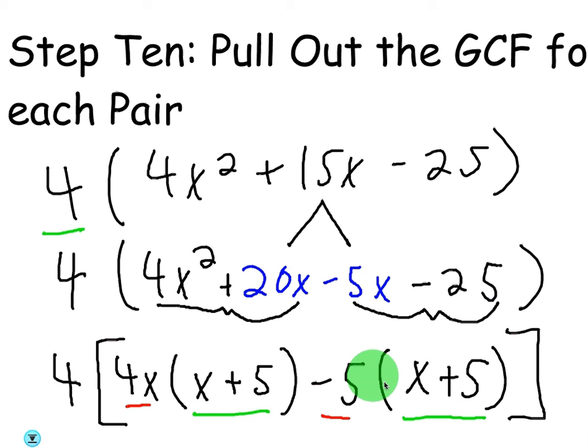Okay, so what would this factor out to be? Okay, x plus 5 is going to be your first factor because that's what's in the parentheses. What's the next factor? The leftovers, yes. So what's underlined in red here? 4x minus 5 is going to be the other factor. Any questions before I go to the next slide?